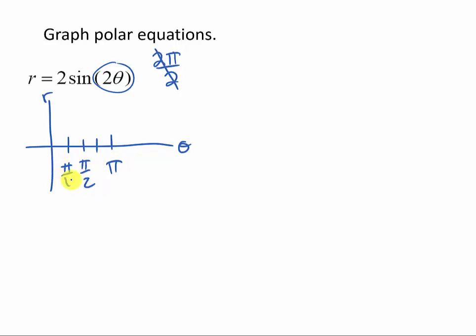So the middle one's pi halves, and the littlest first one is pi fourths, and this would be 3 pi fourths. Now I see the amplitude is 2, so I'm going to go as high and low as 2.